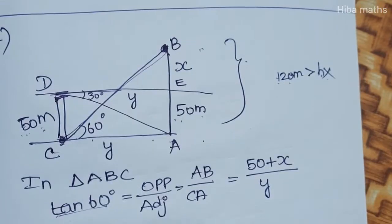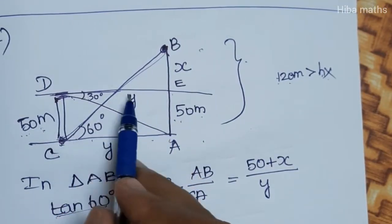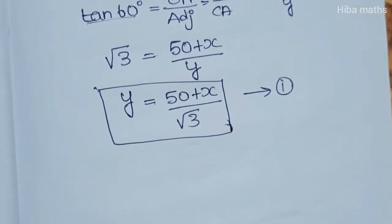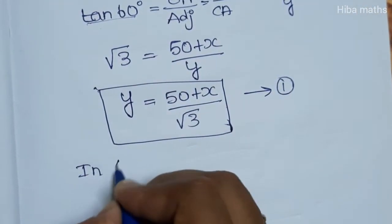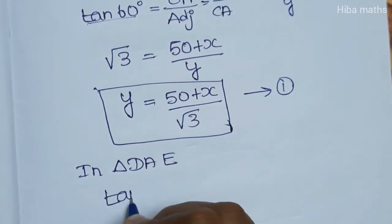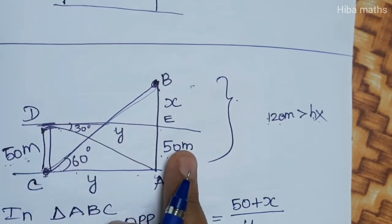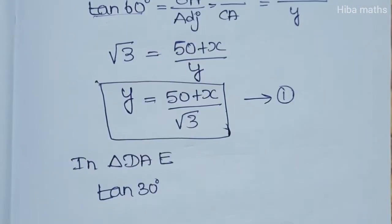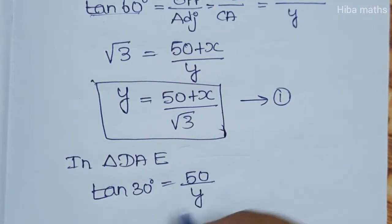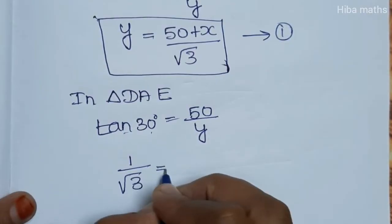Now for tan 30 degrees. In triangle DAE, tan 30 degrees is equal to opposite by adjacent. So tan 30 = 50 / y.